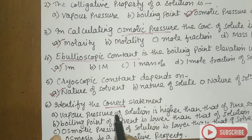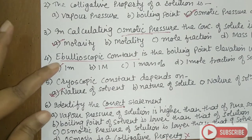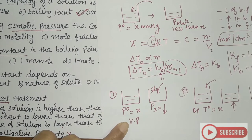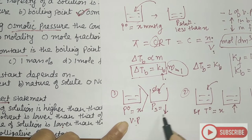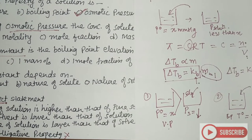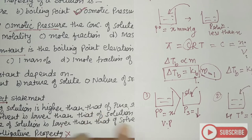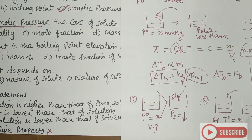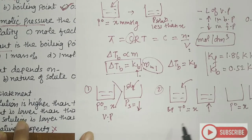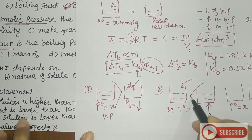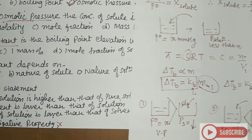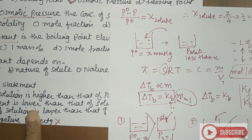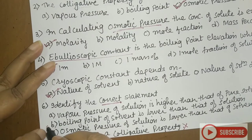Checking the options: the first option says vapor pressure of solution is higher than the pure solvent — that is wrong. The second option says boiling point of the solvent is lower than that of its solution — this is correct. So the answer is the second option.